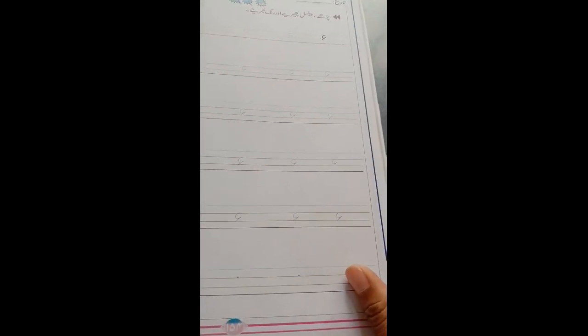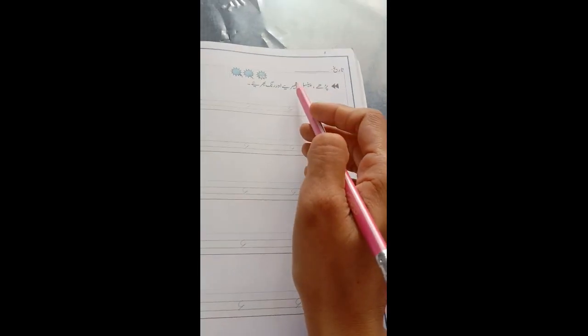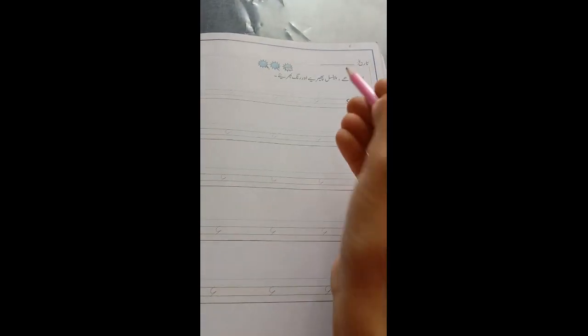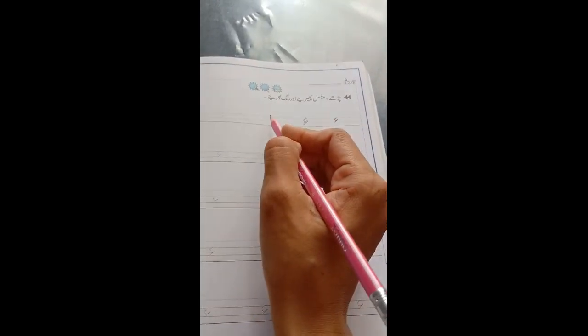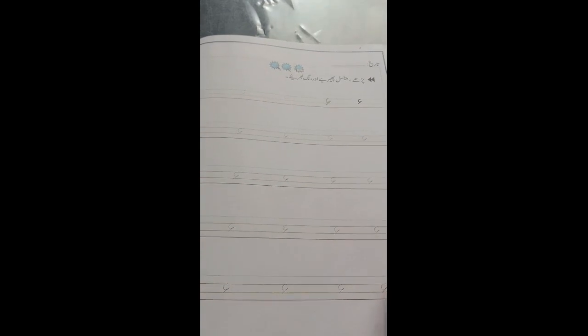Safa nombor 154. Padhiye, pencil pheriye, aur rung bhariye. Yehaan pa r bhi aap hamza ki mukambal karenghe. Tracing, haat pherienghe hamza ke uppar, aur padhenghe hamza.